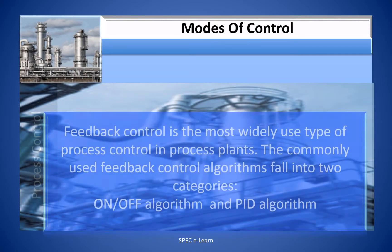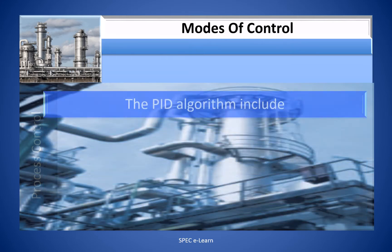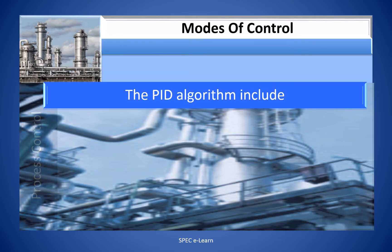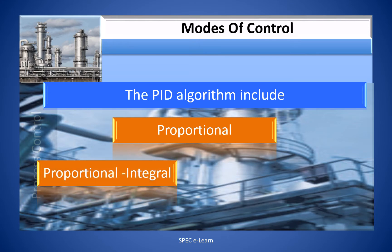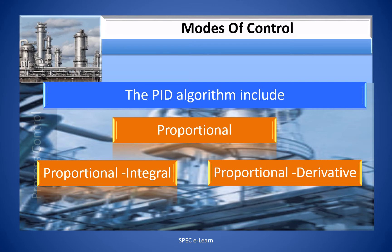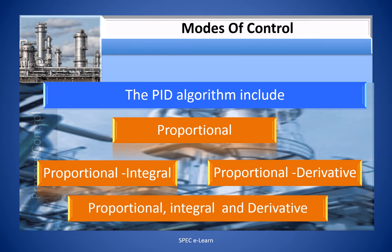Feedback control is the most widely used form of process control in process plants. The most commonly used feedback control algorithms fall into two categories: on-off control algorithm and PID control algorithm. The PID algorithm includes proportional mode, proportional integral (PI mode), proportional derivative (PD mode), and proportional integral and derivative (PID mode).